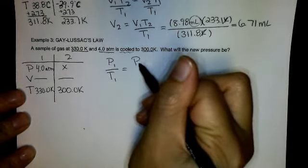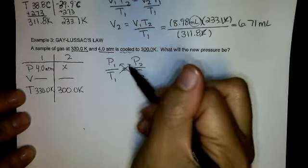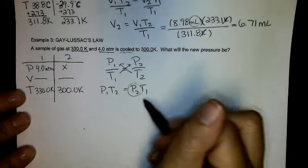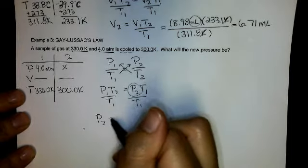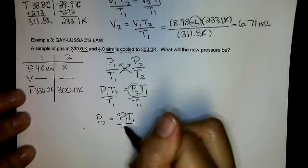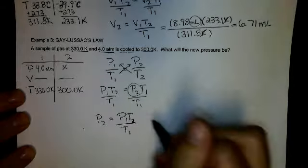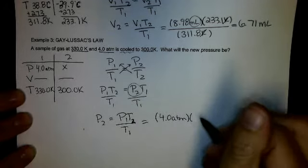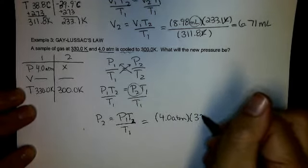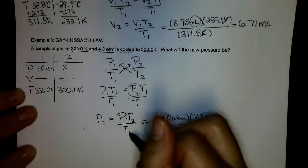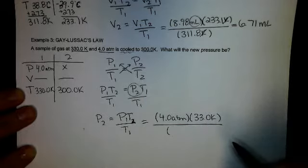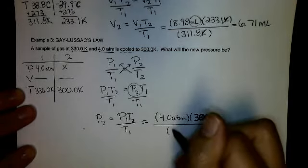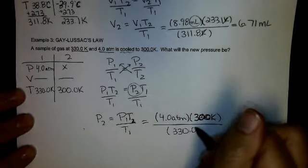P1 over T1, P2 over T2. I cross multiply, then divide. So I get P1 T2 equals P2 T1. I'm looking for P2, so I divide both sides by T1. So P2 is equal to P1 T2 over T1. So I plug in P1 is 4.0 atmospheres, times my temperature of 300.0 Kelvin, divided by my initial temperature 330 Kelvin.